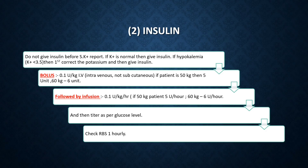For the infusion, if the patient is around 50 kg, the rate is 5 units per hour; for a 60 kg patient, 6 units per hour. Titrate the infusion rate as per the patient's glucose level, checking RBS every one hour.